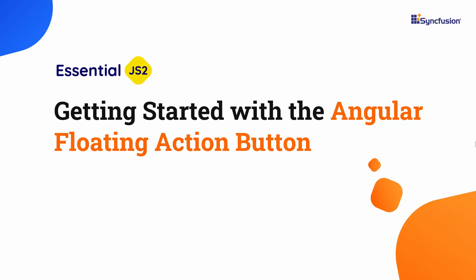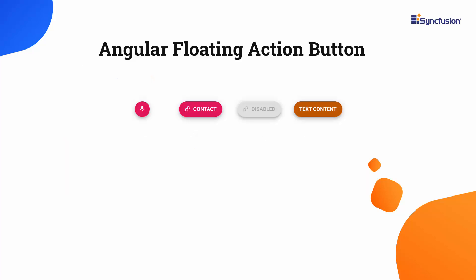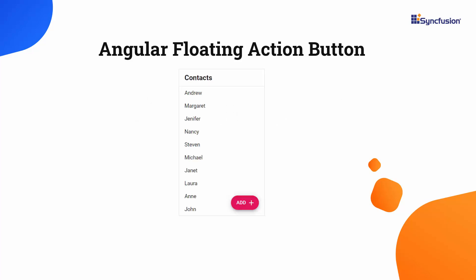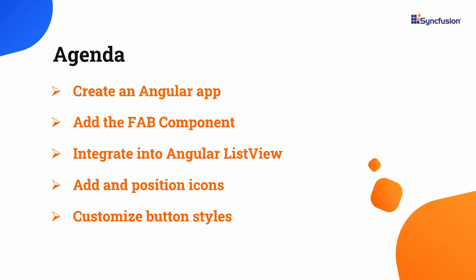Welcome to the Angular Floating Action Button Tutorial. The SyncFusion Angular Floating Action Button is a circular or rounded button that appears to float over all the contents of a web page to trigger the primary screen action. In this video, I will show you how to create an Angular app, add the SyncFusion Angular Floating Action Button component, integrate it into the Angular ListView component, add and position an icon in the button, change the button position, and customize button styles.